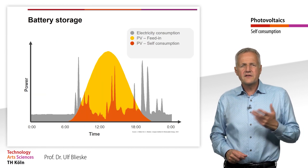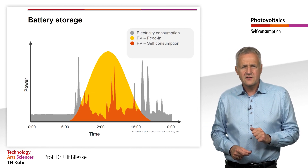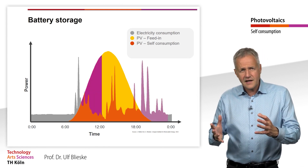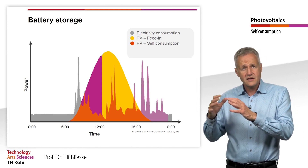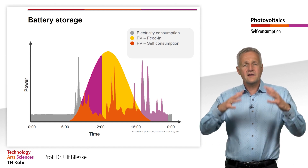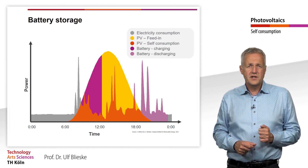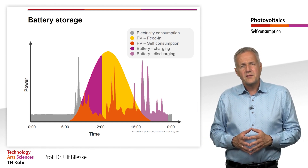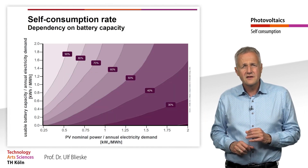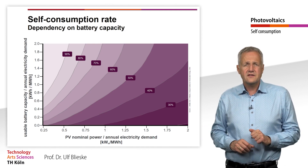A battery storage can be integrated into the system to increase self-consumption. This allows excess electricity to be temporarily stored and later self-consumed, resulting in a higher self-consumption rate overall. But how large should such storage be? This question can be best answered by simulations. Here you can see the annual self-consumption rate depending on the size of the storage and the generator.